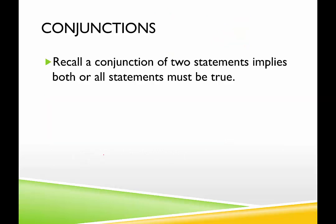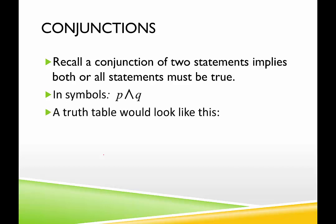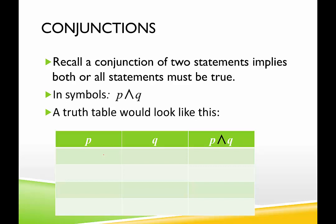We're going to start with a conjunction. A conjunction of two statements implies that both or all statements must be true. In order for a conjunction to be true, all statements must be true. The symbol we use is P ∧ Q. A truth table for a conjunction has four rows. When both P and Q are true — for example, 'the sky is blue and the grass is green' — both parts are true, so the conjunction itself is true.